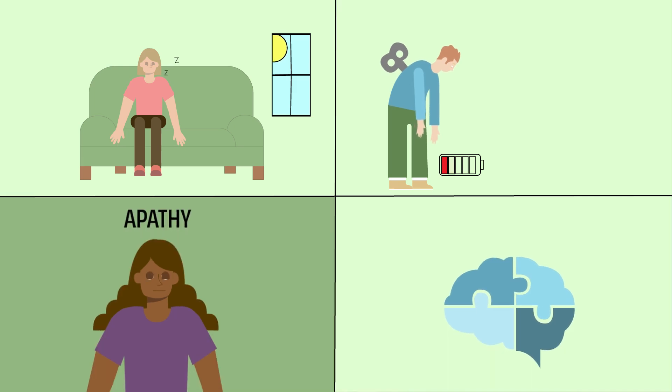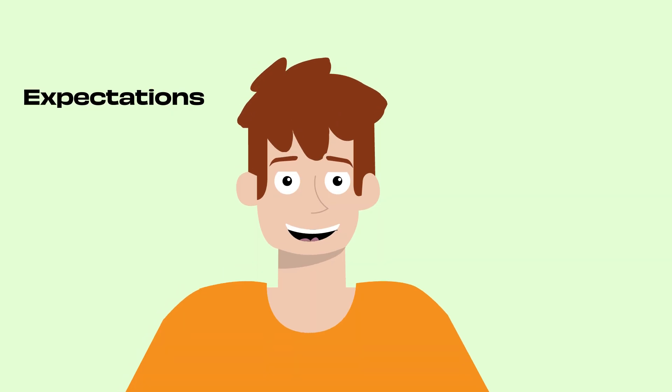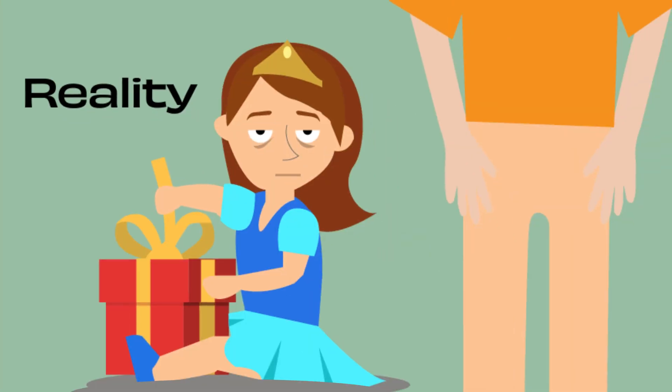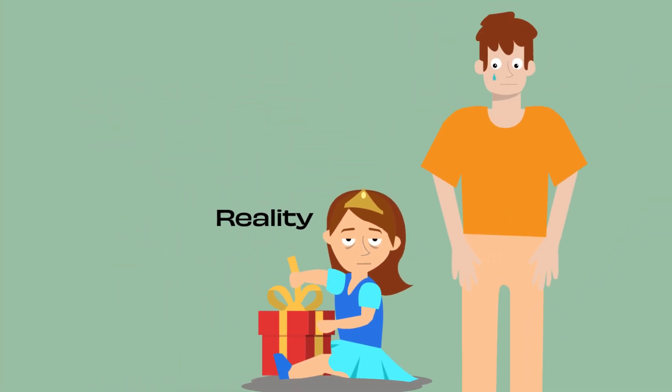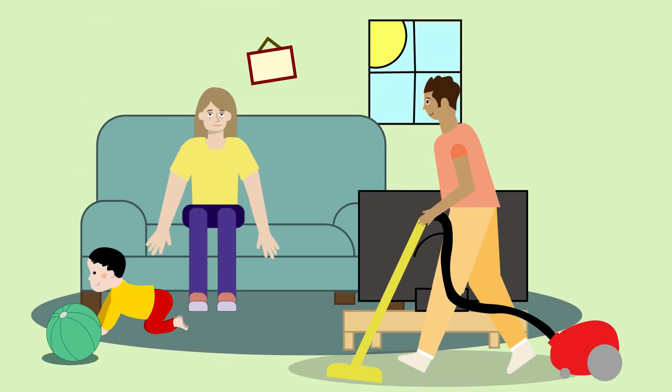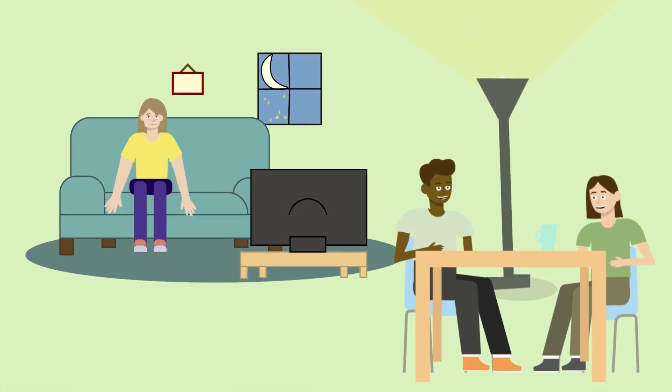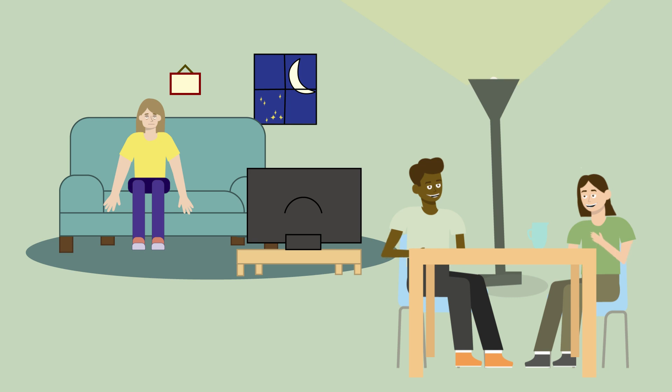In general, apathy can be described as a lack of motivation and a state of indifference in situations that should elicit emotions. In everyday life, this can manifest by a low level of activity. If your affected relative is not very active or productive, it is important to talk about it.